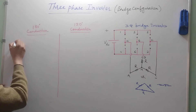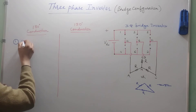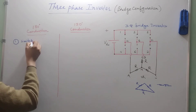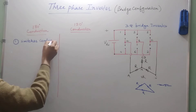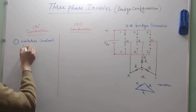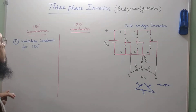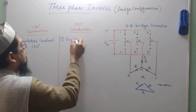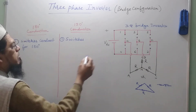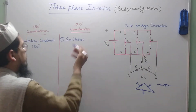The first point, which is the basic difference between the two modes, is that in 180-degree conduction mode the switches conduct for 180 degrees, while in 120-degree conduction mode all the switches — 1, 3, 5, 4, 6, and 2 — conduct for 120 degrees.